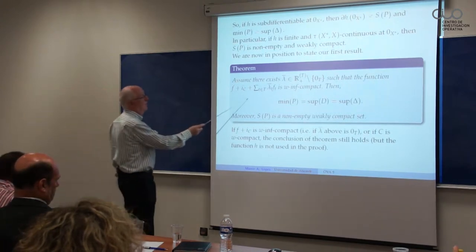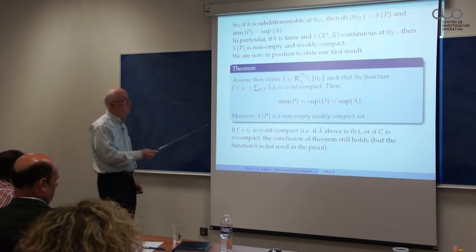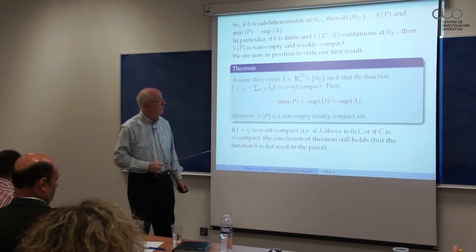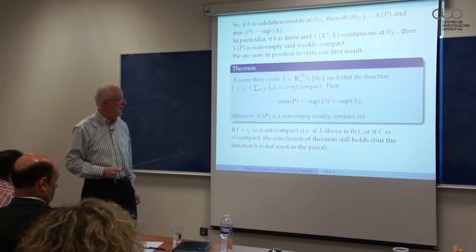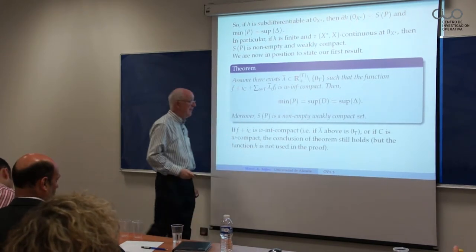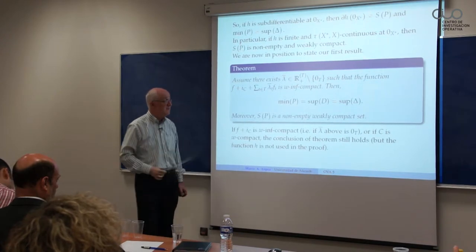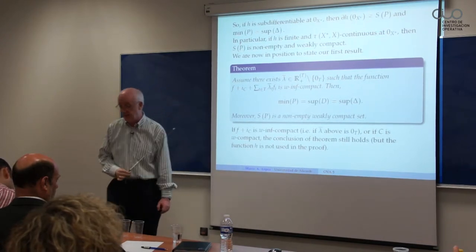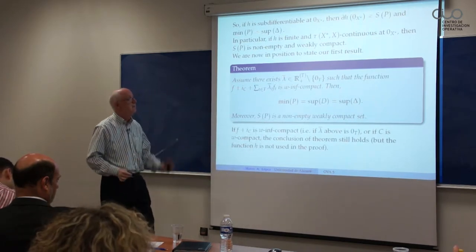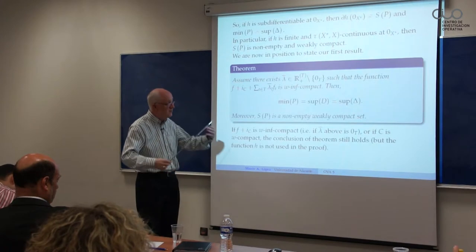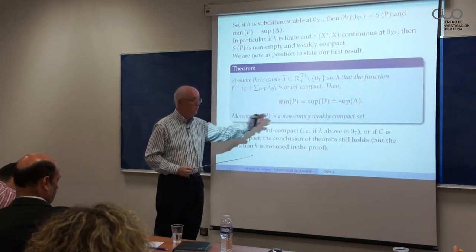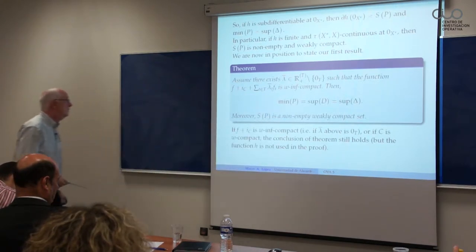The condition is as follows. In this theorem, we prove that assuming there exists a non-zero lambda-bar such that this function here is weakly inf-compact, then the minimum coincides with the supremum — no duality gap — and, more importantly, the optimal set is non-empty and weakly compact. This is quite strong. We will see in other situations, relaxing these conditions, that we get a kind of extension, not as strong as this one.